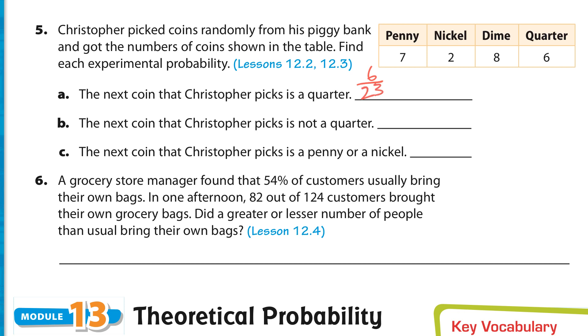How about the next coin is not a quarter. Well, how many are not quarters? 23 minus 6. So, 6 of them are quarters. So, that's 17. So, 17 out of the total coins is still 23. What about the probability the next coin picks is a penny or a nickel? So, that would be 9. That would be 9 out of 23.